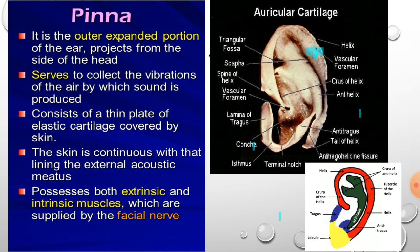The pinna is the outer expanded portion of the ear that projects from the side of the head. It serves to collect the vibrations of the air by which sound is produced and consists of a thin plate of elastic cartilage covered by skin. This skin is tightly bound to the cartilage, not allowing much room for the expansion of blood or inflammatory exudate in disease conditions, making such conditions very painful.